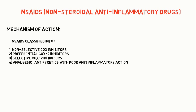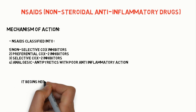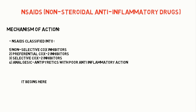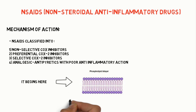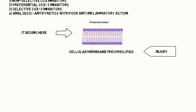To understand the mechanism of action of NSAIDs, first we have to know about the synthesis of pain and inflammatory mediators. We know that the cellular membrane is made up of a bilayer of phospholipids. When there is an injury to cellular membrane phospholipids, arachidonic acid is released with the help of phospholipase A2, which is then converted into prostaglandins and leukotrienes.